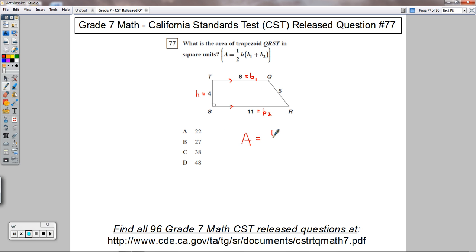So I'm going to fill in the numbers here. Area is one half times the height is four, and the bases are eight and eleven.